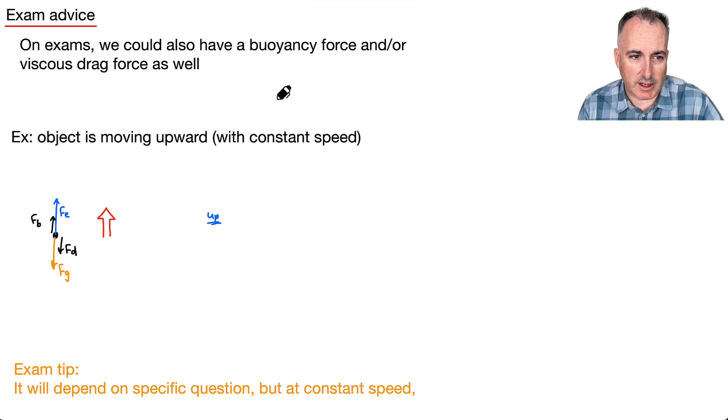So that means, in this case, if I want to do the up ones, so maybe I'll even write it like this. I'll say up. Well, that's going to be, let's see, it's going to be F_b plus F_e, and that's going to be equal to, in this case, the down, so F_g plus F_d. That'll be the downs.